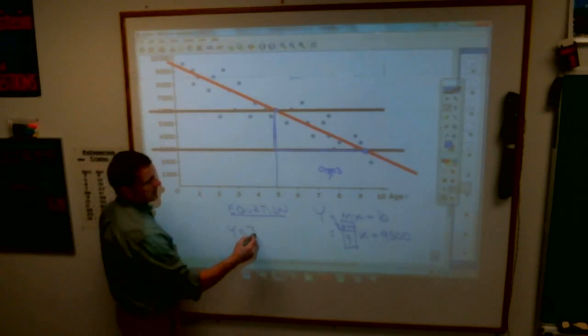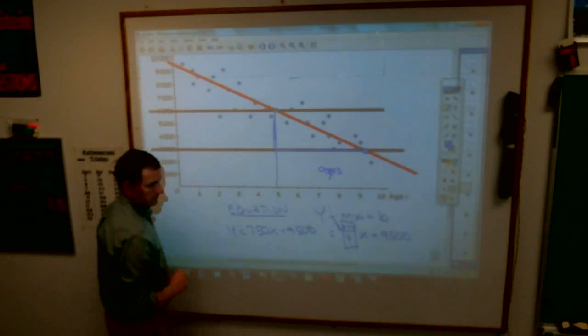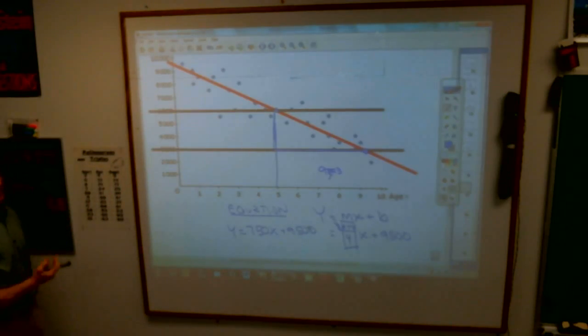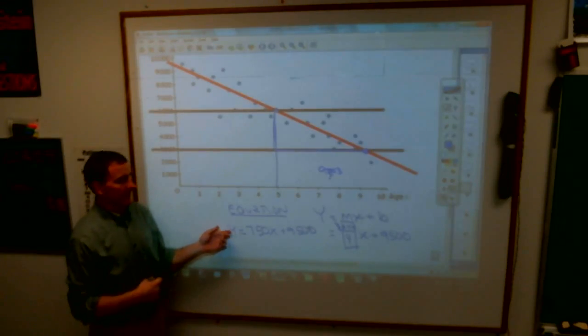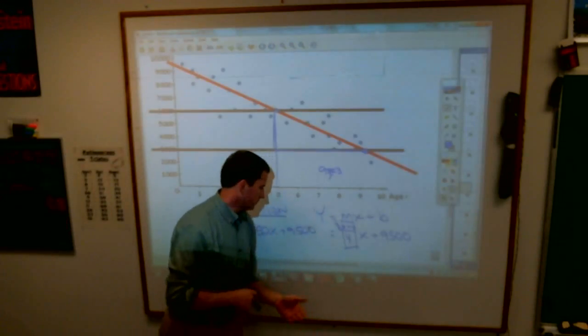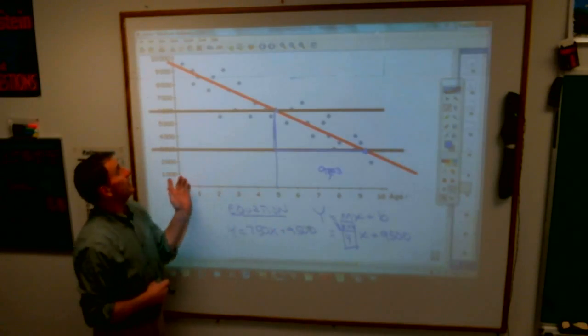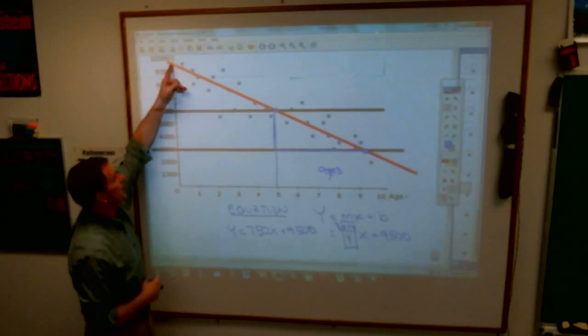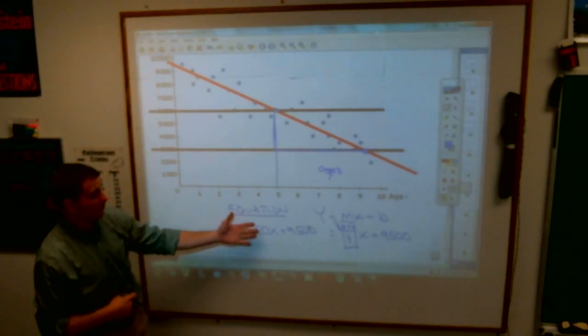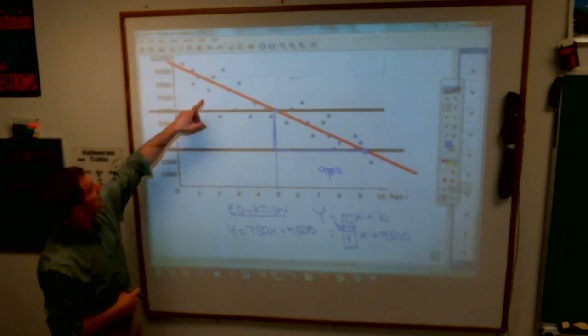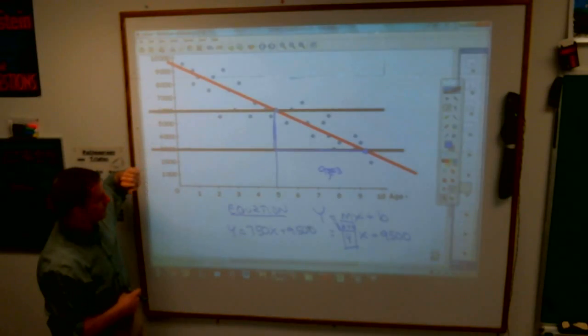So y equals 750 times x plus 9,500. And with that, if you have this equation, you can predict anything. You can predict at age 12, just put 12 in for x and figure out your thing. At age 0, you got 9,500, which is what we should have. At age 1, 9,500 plus 750 is what? 10,250? I'm sorry. No, it's 750 times x plus one.